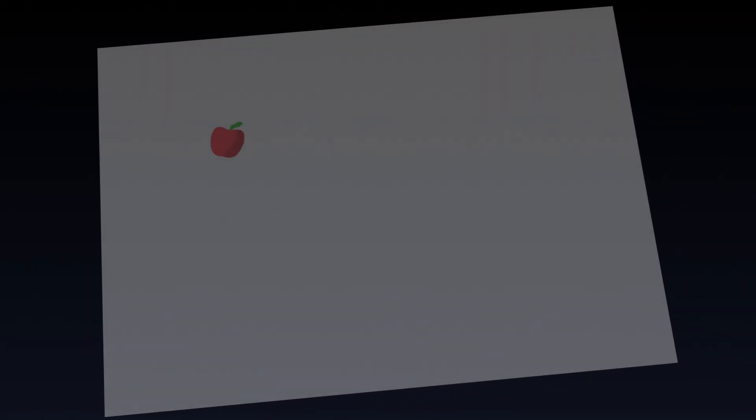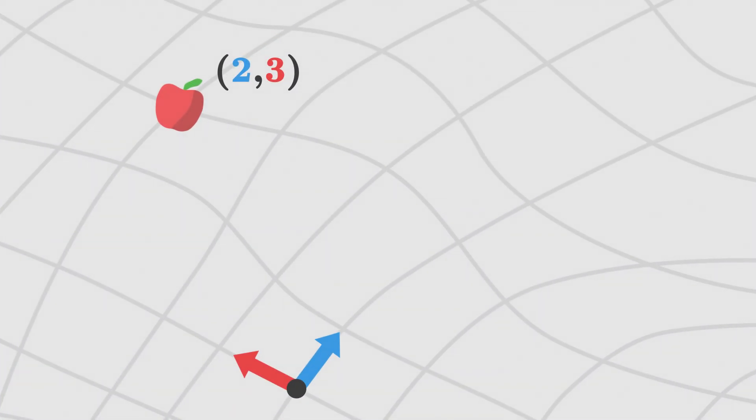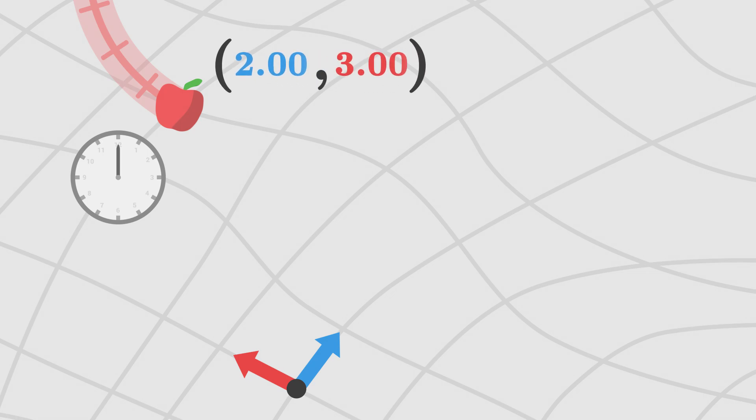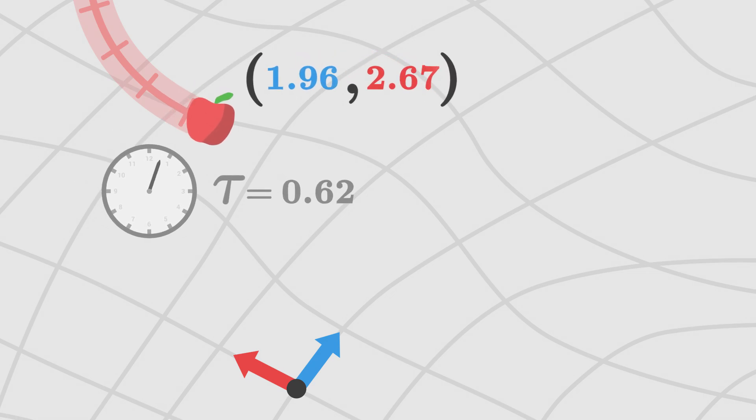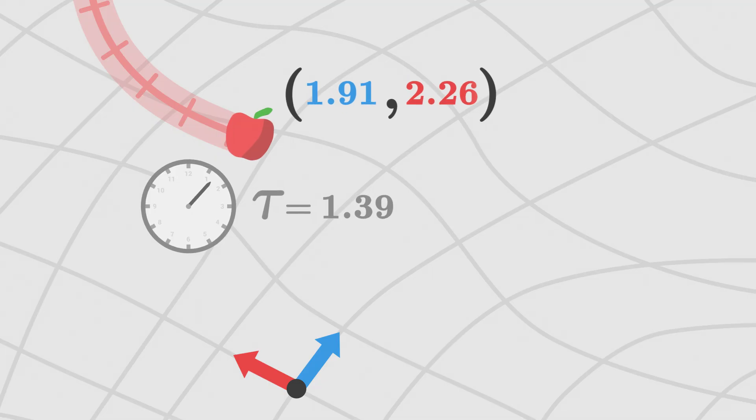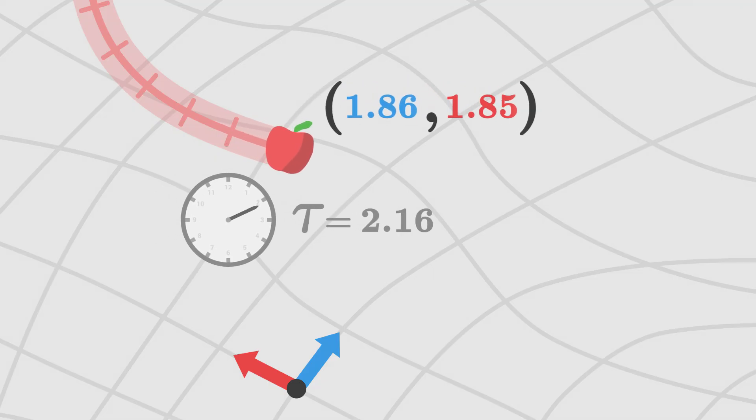We are now able to describe the position of the apple through two coordinates on the grid. As we saw, we interpret the world line as a movement while proper time goes by. The coordinates of the apple which describe its position evolve, they depend on proper time, and it is therefore interesting to define the notion of velocity.